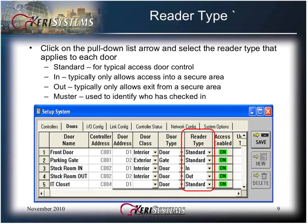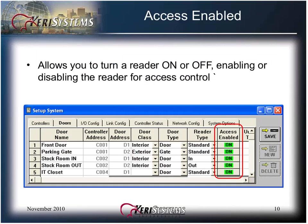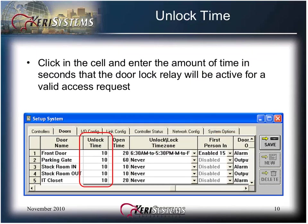Turn on the roll call track feature in system options to enable the reader type field. This feature is also used for time and attendance. If enabled in system options, click on the pull-down list arrow and select the reader type that applies to each door. A standard door is for typical access control and typically only allows access into a secure area. An out reader typically only allows exit from a secure area, and muster is used to identify who has checked in to a specified reader within the system. Access enabled allows you to turn a reader on or off, enabling or disabling the reader for access control. If the controller is an entry guard telephone entry unit, access enabled can be set to off to disable the entry guard user IDs from unlocking the door.